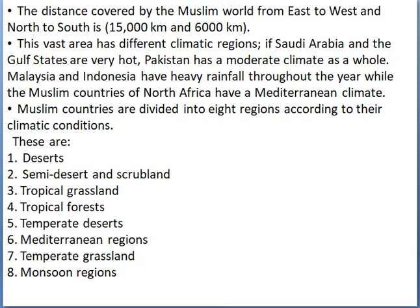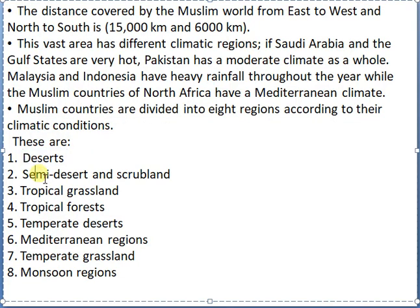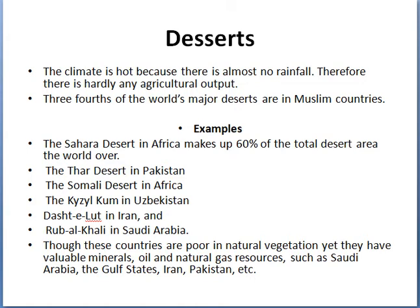I have written the eight regions over there: deserts, semi-deserts and scrubland, tropical grasslands, tropical forests, temperate deserts, Mediterranean regions, temperate grasslands, and monsoon regions. At the top of the list we have deserts. The climate in deserts is hot because there is almost no rainfall, and therefore there is hardly any agricultural activity or output in these regions. Three-fourths of the world's major deserts are in the Muslim countries.